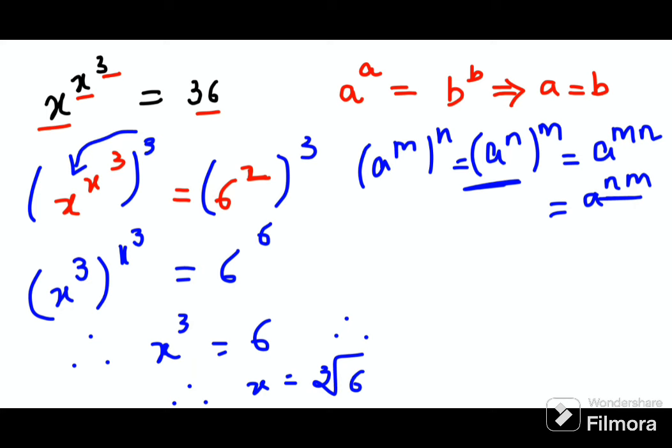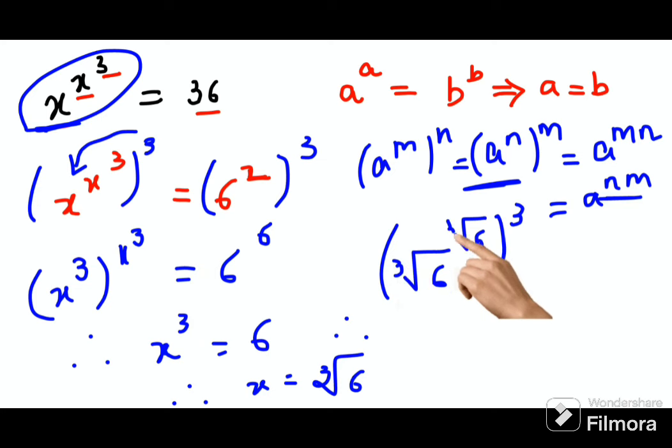Now to see whether it's actually correct, let's put this value back. We have cube root of 6 raised to cube root of 6 raised to 3, this will become just 6. Now cube root can be written as 1 upon 3 into 6.